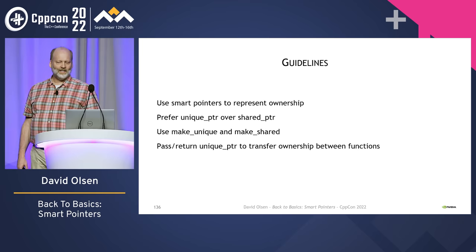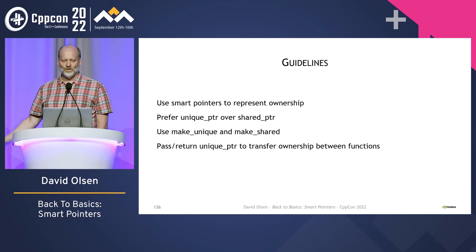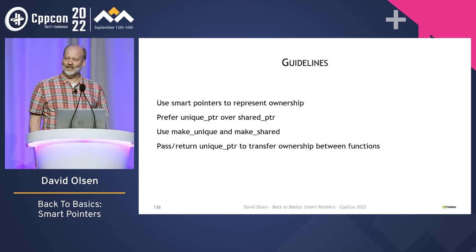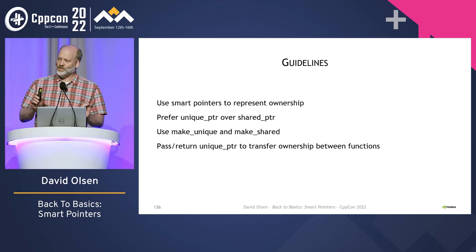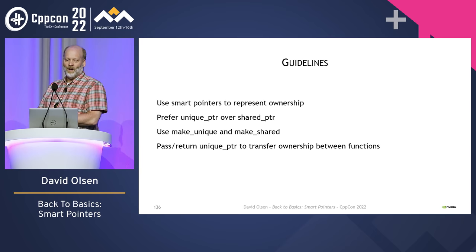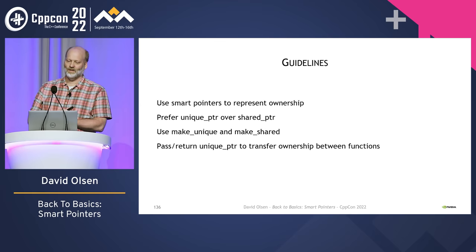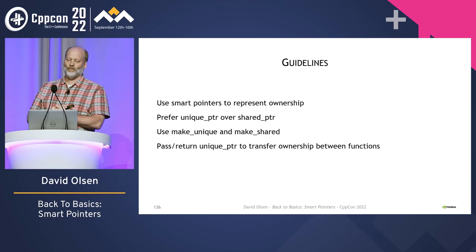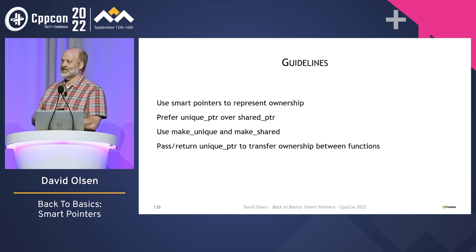And finally, some guidelines. If you take anything away from this talk, remember these and try to use them in your code. These are just guidelines, not unbreakable rules — sometime in your career you will find cases where they don't apply. But if you want to break them, understand what you are doing and what the consequences might be. The guidelines: Always use smart pointers to represent ownership. If there's any doubt about which one is best, use unique_ptr instead of shared_ptr. Use make_unique and make_shared wherever feasible. Pass unique_ptrs by value and return unique_ptrs by value to transfer ownership between functions.